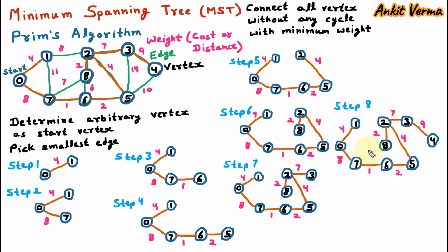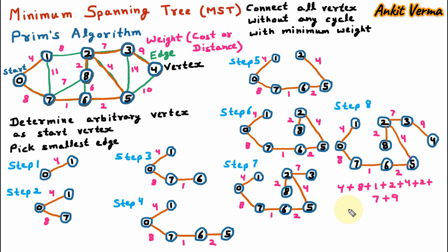Now we find the total weight of this minimum spanning tree: 4 + 8 + 1 + 2 + 4 + 2 + 7 + 9 = 37. So 37 is the total weight of the minimum spanning tree created using Prim's algorithm.